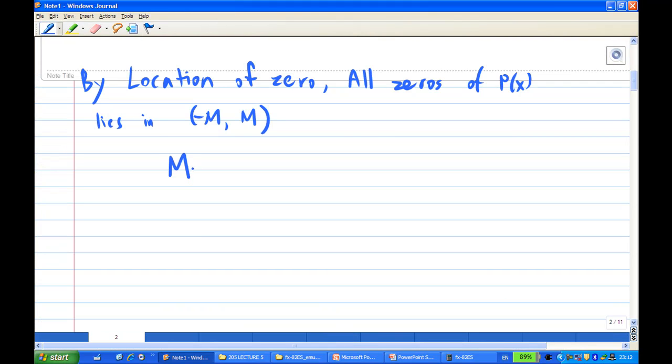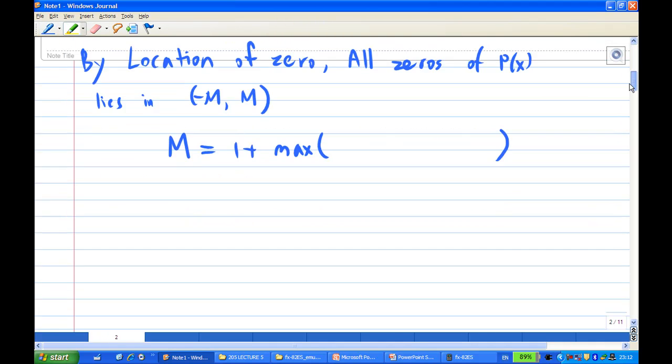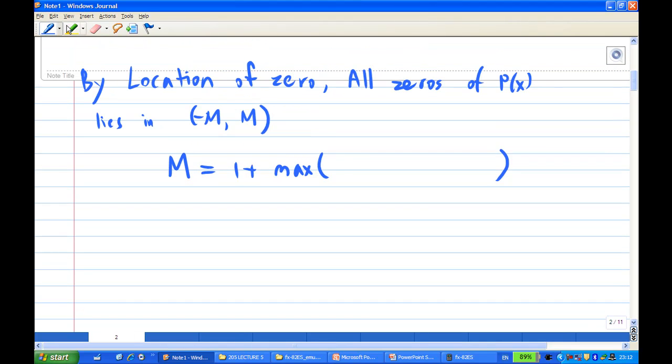Therefore, what is M now? M is equal to 1 plus maximum of the absolute value of the coefficients. If the leading coefficient is 1, which we have here, the coefficients are absolute value of minus 5 and absolute value of 3.